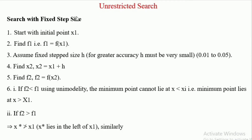The next topic is unrestricted search — search with fixed step size. The step size is fixed. The first step is: start with initial point x1. The second step is: find f1, that is f1 equals f(x1). The function is the unimodal function.